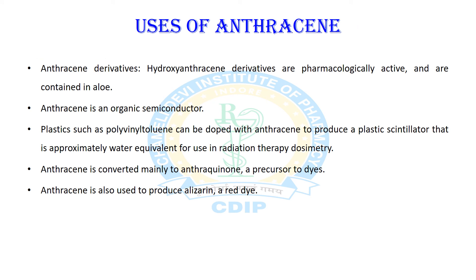Regarding the uses of anthracene: anthracene derivatives having hydroxy groups — 1-hydroxyanthracene and 2-hydroxyanthracene — are homologues to phenols and naphthols. Hydroxyanthracene derivatives are pharmacologically active and are contained in aloe substances also. Anthracene is also used in organic semiconductors and as a scintillator for detectors of high-energy photons, electrons, and alpha particles. Plastics such as polyvinyl toluene can be doped with anthracene to produce plastic scintillators for use in radiation dosimetry. It can mainly be used for the preparation of anthraquinone, which is a precursor to red dye, and the same precursor is used to produce alizarin, which is also a red dye. So it is used in the dye industry as well.